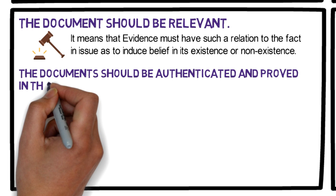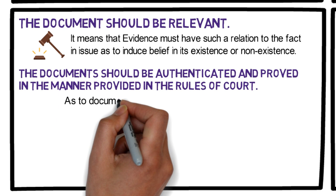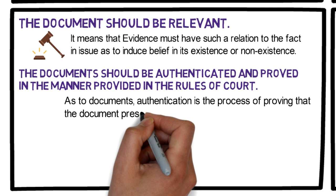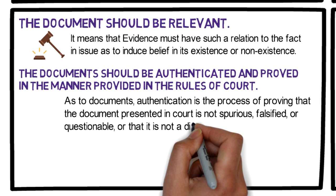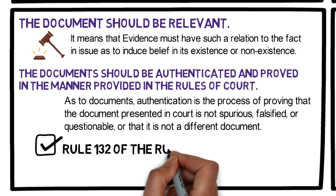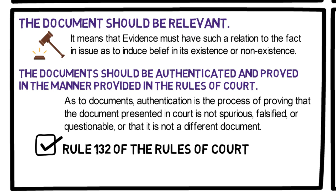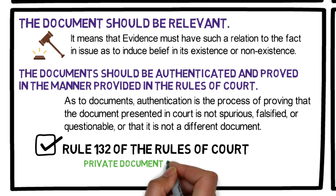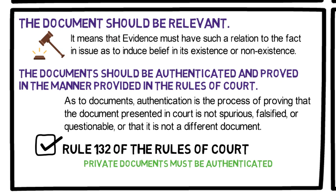The second requisite: the document should be authenticated and proved in the manner provided in the Rules of Court. Authentication is the process of proving that the document presented in court is not spurious, falsified, or questionable, or that it is not a different document. Rule 132 of the Rules of Court governs the rules on authenticating documents. Public documents are admissible without further proof of their due execution, whereas private documents must be authenticated.